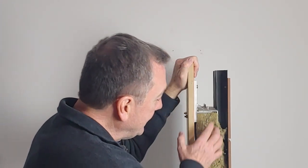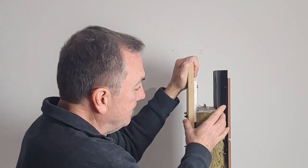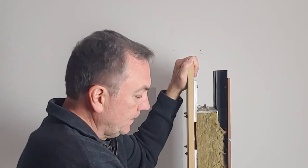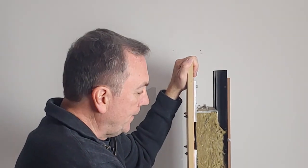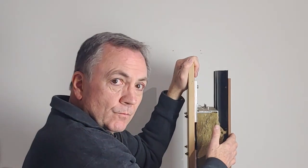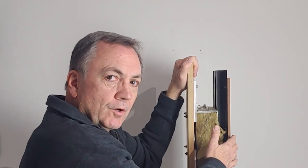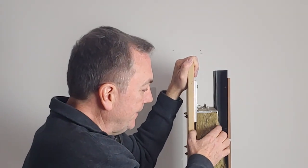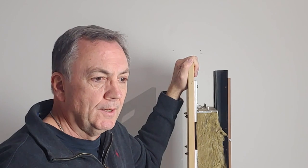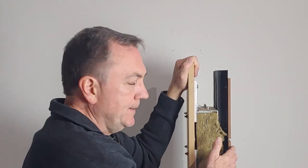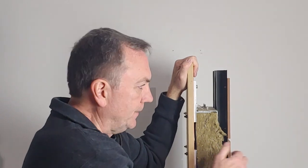Another thing it has is that because this rock wool is within this aluminum bracket, what that does is it keeps the rain screen material close to the insulation but not touching it. And that's significant too if you compare it to having hat channels, because hat channels would push this out even further.